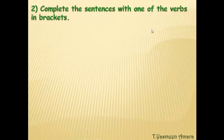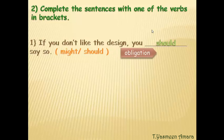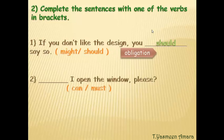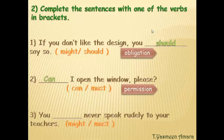Question number two: complete the sentences with one of the verbs in brackets. Number one: 'If you don't like the design, you ___ say so' — choices: might or should. This expresses obligation, so we choose 'should.' Number two: '___ I open the window please?' — choices: can or must. This expresses permission, so we use 'can.' Number three: 'You ___ never speak rudely to your teachers' — choices: might or must. This expresses obligation, so we use 'must.'